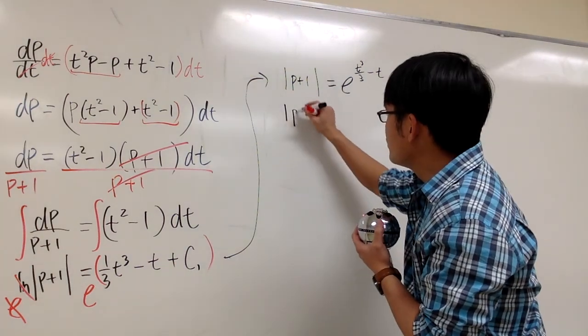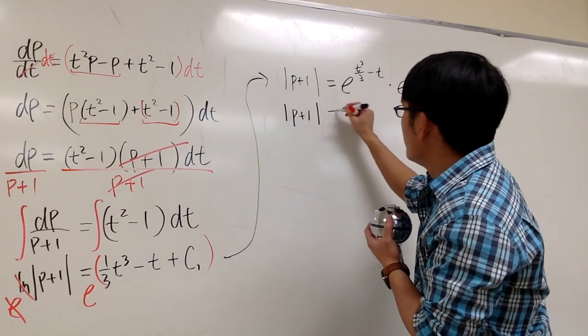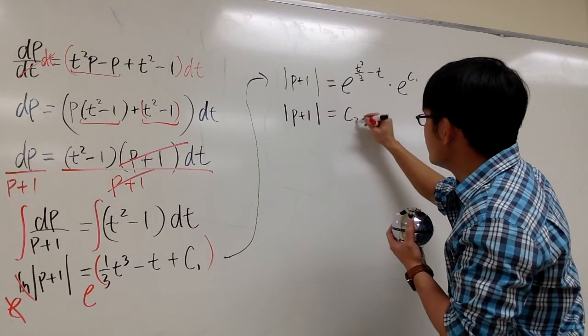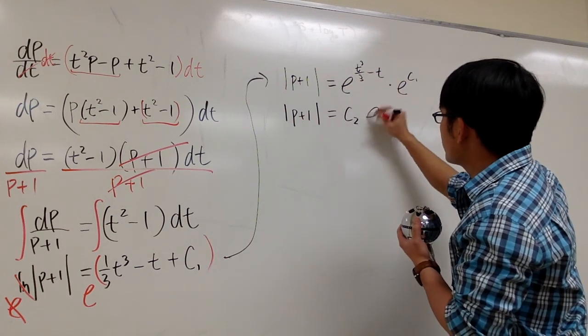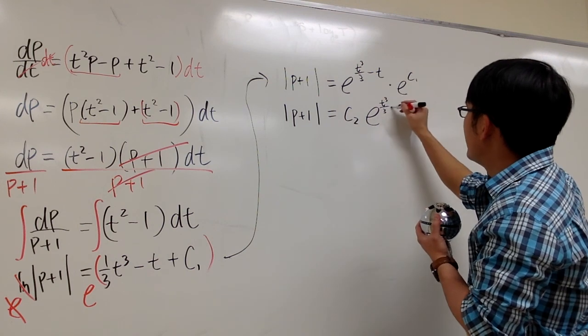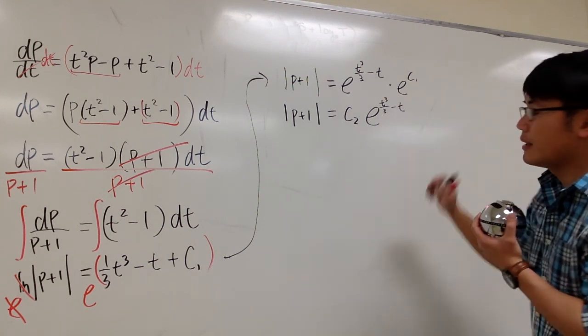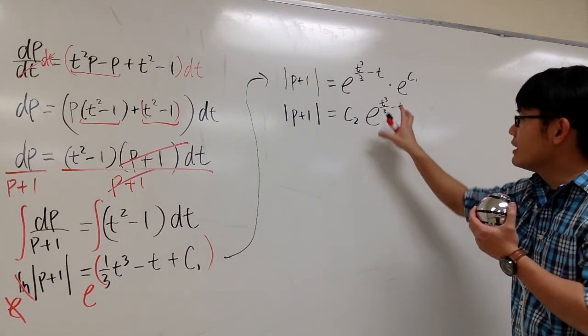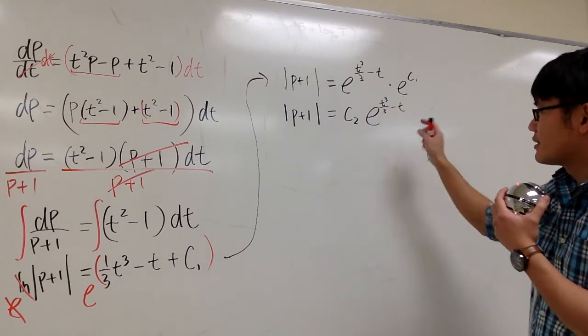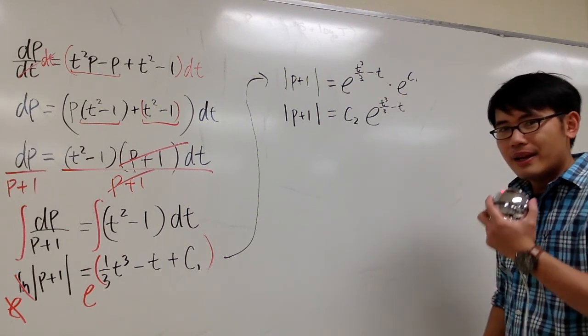So, I have absolute value, p plus 1. This is c2. Let me put that right here first. c2. And then this is the function part. I cannot do anything with it. So, it's e to the t to the third power over 3 minus t. I'm not going to separate them because this is just as fine. Even though I can separate them, but that's too bizarre, I would say.